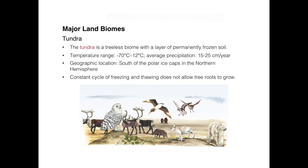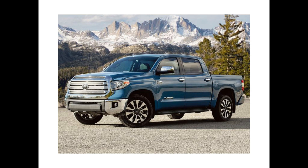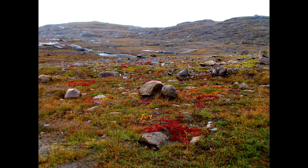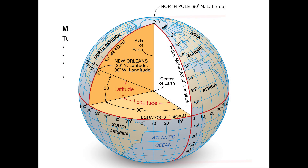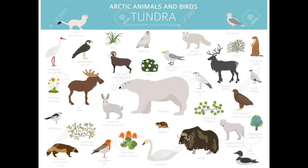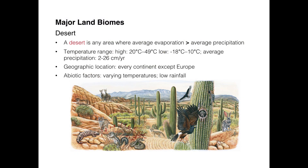The tundra is a treeless biome with a layer of permanently frozen soil, so you can't support much plant life. Temperatures range from negative 70 to 12 degrees Celsius, and average precipitation is only 15 to 25 centimeters per year. Tundra is found at the polar ice caps and high northern latitudes — near 90 degrees latitude. Traditional deserts, like those in the U.S., have highs of 20 to 49 degrees Celsius and lows of negative 18 to negative 10 degrees Celsius.